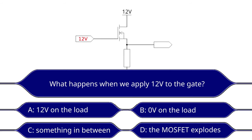Is it A, the MOSFET turns on and the output voltage is 12, or is it B, the MOSFET doesn't turn on, or is it C, something in between, or D, the MOSFET blows up?